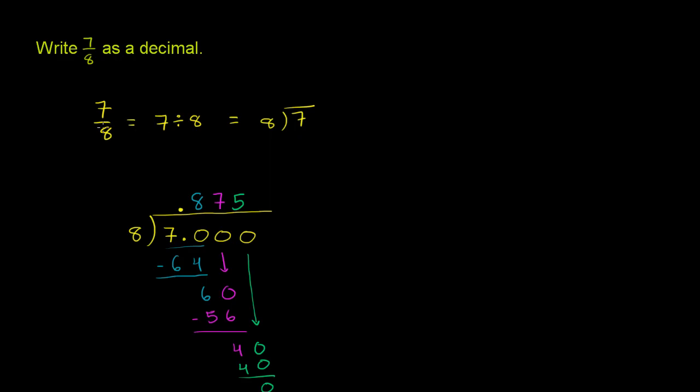7 divided by 8, or 7/8 is equal to 7 divided by 8, which is equal to 0.875. But I'll put a leading 0 here just so it makes it clear that this is where the decimal is. 0.875. And we are done.